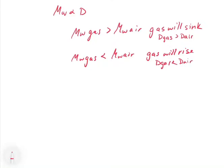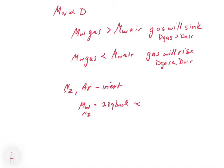This is really important in a chemistry lab. We often use nitrogen and argon as non-reactive gases for experiments. Nitrogen has a molecular weight of about 28 g/mol, which is very close to air at 29 g/mol. So if a nitrogen tank leaked, the nitrogen would fill the room evenly — if anything, it's slightly less than air so it might rise a little, but it's very close.